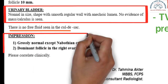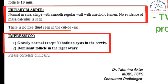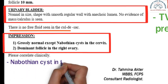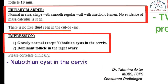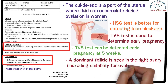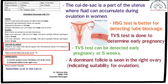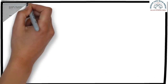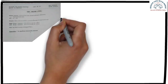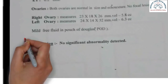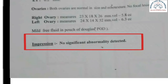We have read the detailed report and can see the impression or comment section at the end of the report. You don't need to read all of the above — just read this section, which will let you know if there is any problem. You can see detailed size and shape information above, but the important findings are listed in the impression. This report states that everything is grossly normal except for a Nabothian cyst in the cervix, and a dominant follicle is seen in the right ovary indicating suitability for ovulation. Another report's impression states that no significant abnormality was detected, indicating that report is normal.